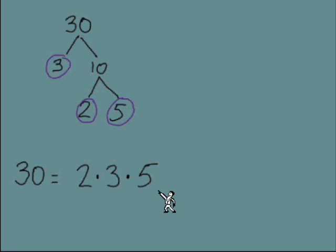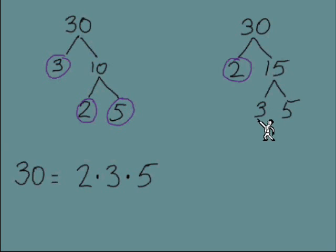And I just wrote them in increasing order just to be organized. I want to point out to you that it doesn't matter how we initially break the number up. If I say 30 is 2 times 15, I'll see that the 2 is a prime number and the 15, we can break that up as 3 times 5 and those are prime numbers.